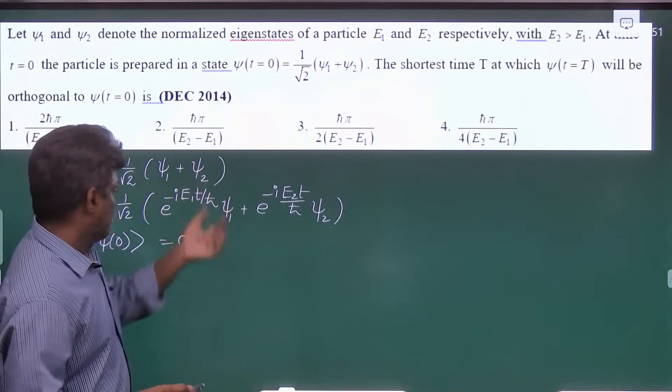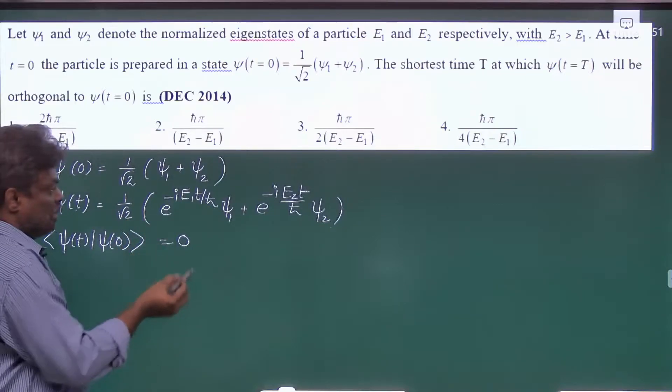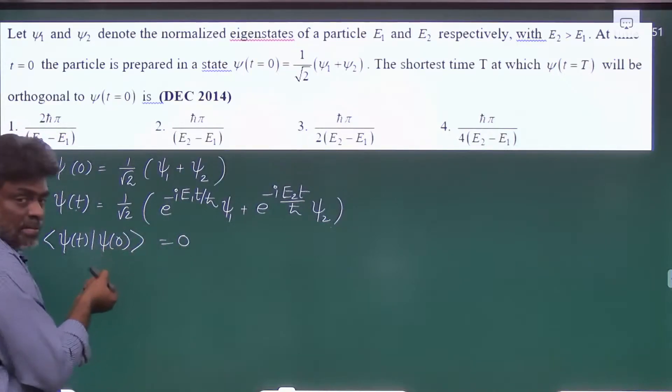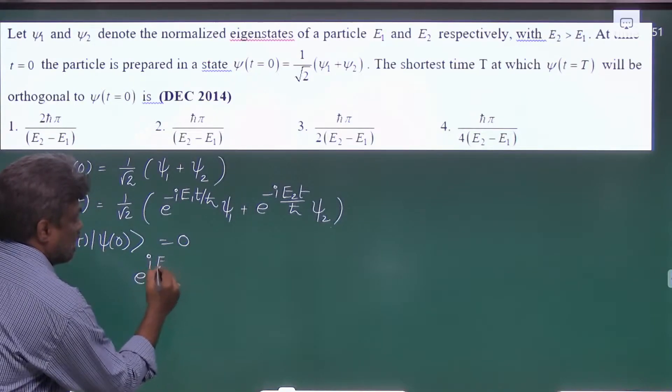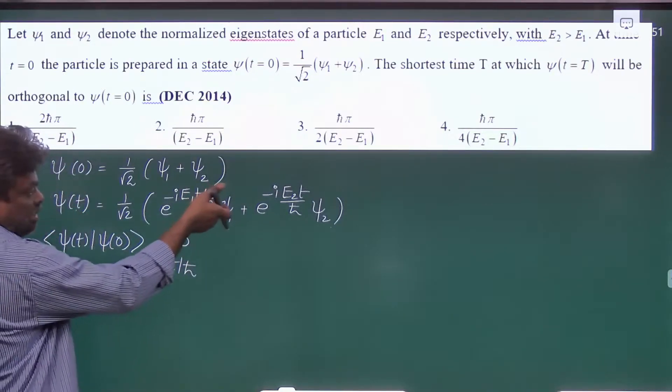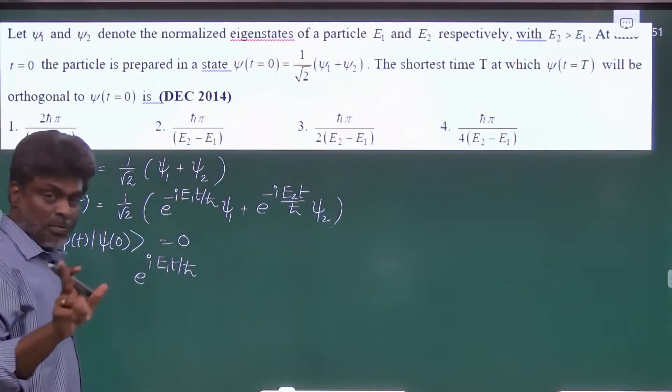If you take this inner product, so here this is in the bra vector, so that's why it is e raise to i E1 t by h cross, and this inner product Psi 1 and Psi 1 will be 1, and